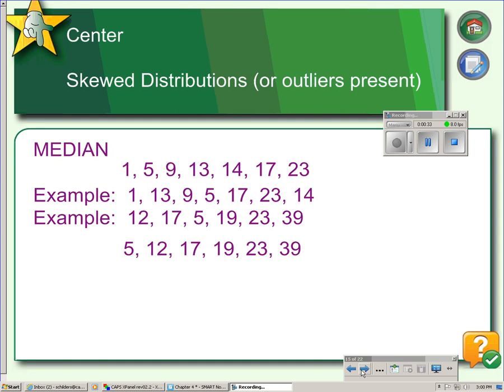In particular, if you have a skewed distribution, you should describe the center using the median. The median of a data set is the middle value. That is, it divides the data set in half so that there are equal number of observations above the median and below the median.